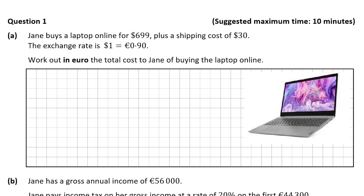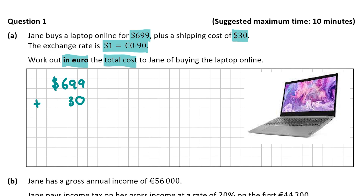We're told that Jane buys a laptop online for $699 US dollars plus a shipping cost of $30. We're also given the exchange rate from dollars to euro, and we're asked to work out in euro the total cost to Jane of buying the laptop online. So the first thing I'm going to do is find the total cost in dollars: $699 plus $30 gives us $729 US dollars.